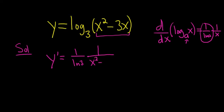x squared minus 3x times, and then the derivative of the inside piece. That's the chain rule. So the derivative of x squared is 2x, and the derivative of minus 3x is minus 3.